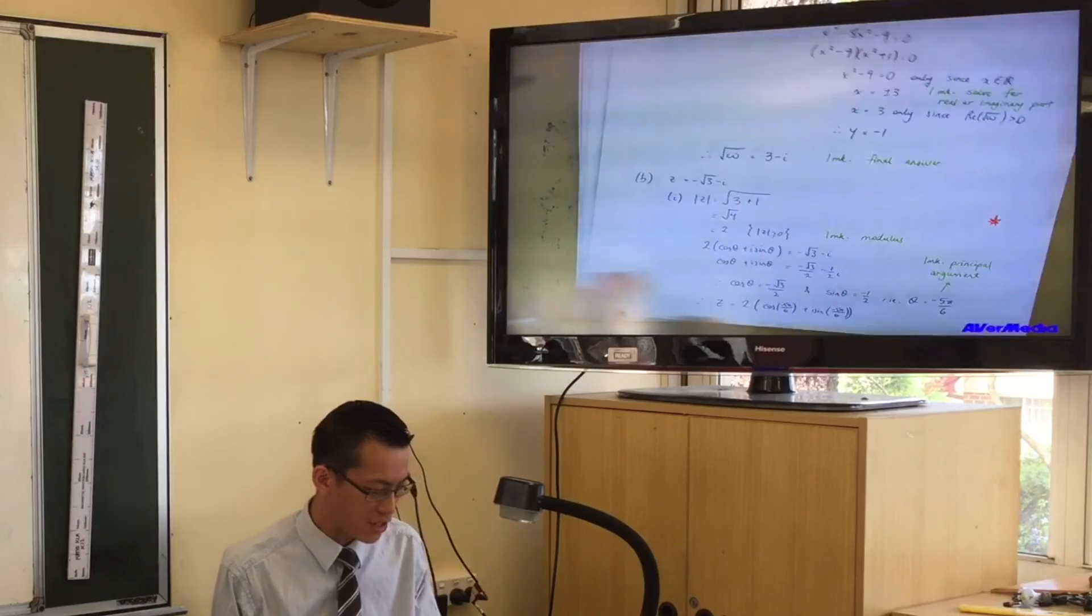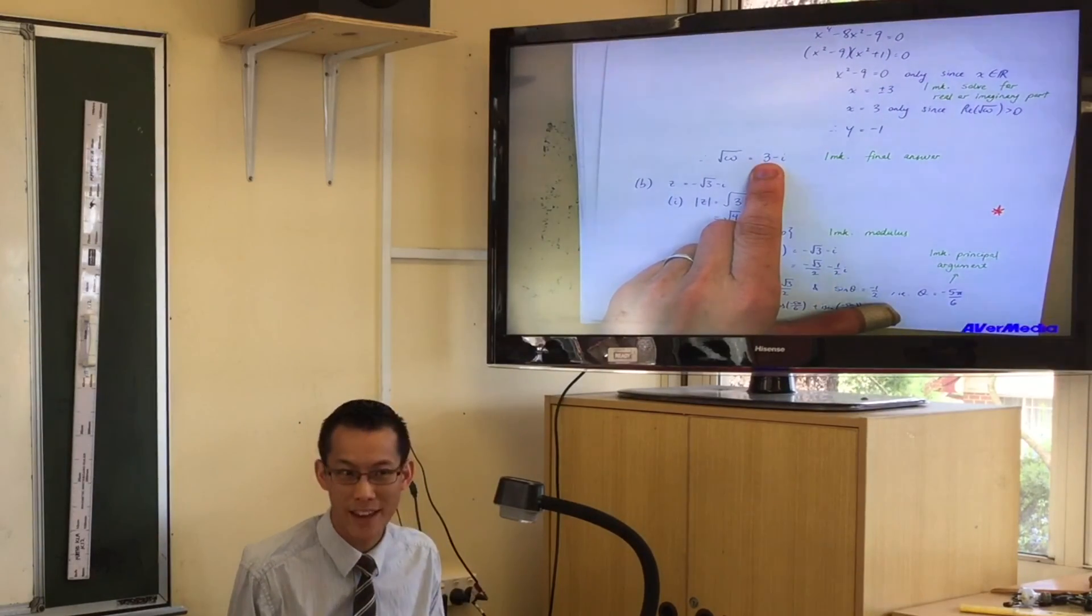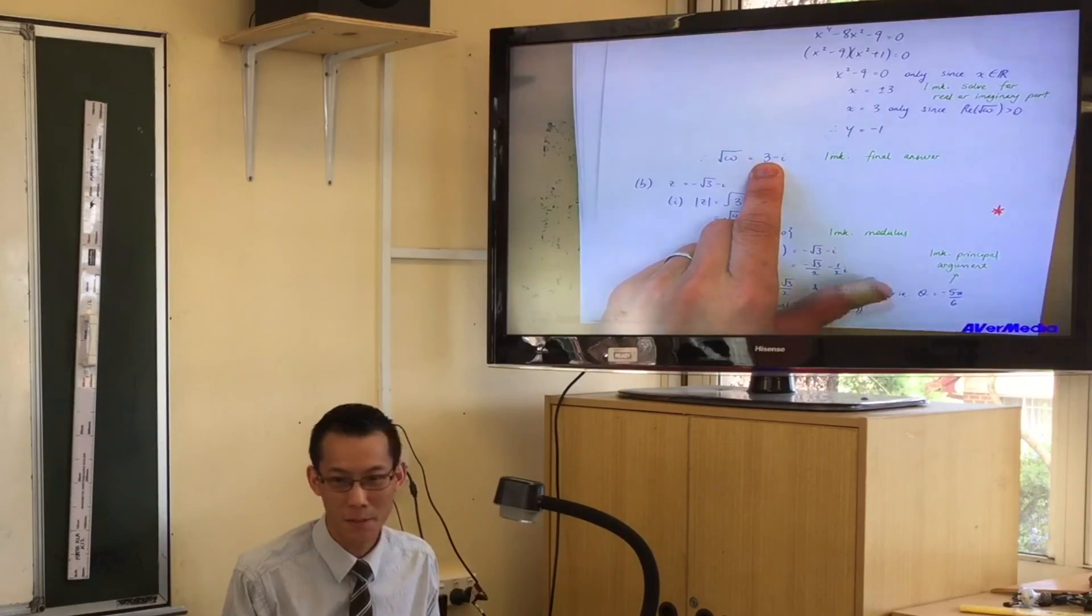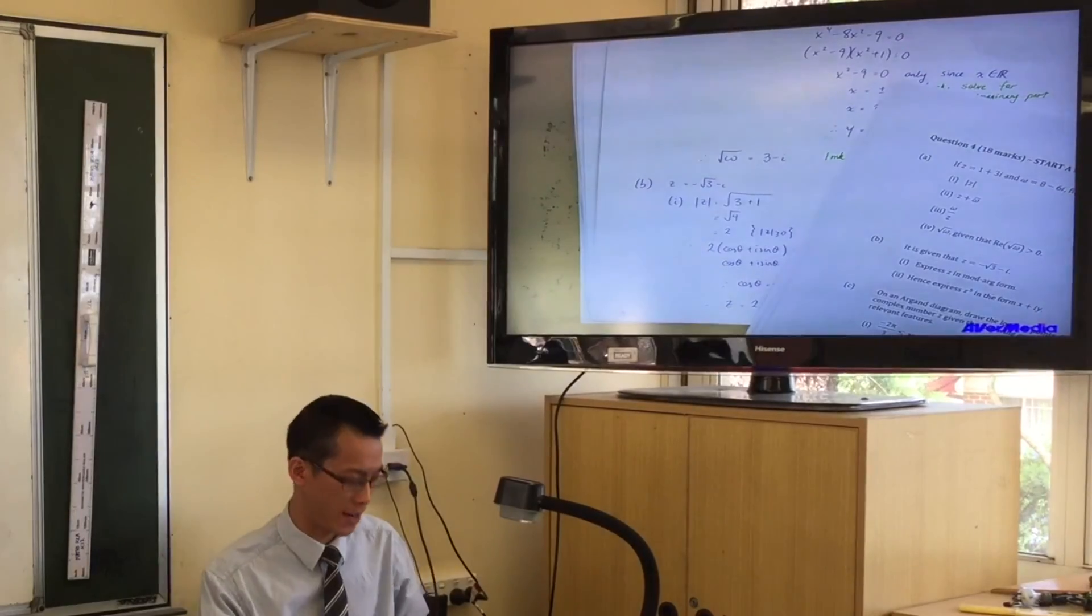Once you've got that, you get your negative one, and don't forget, most of you did it pretty well, but a number of you just said, oh, x is this and y is that. Good for you, do you want a medal? I want the complex number. So tell me the square root of omega.